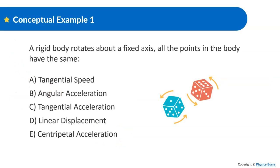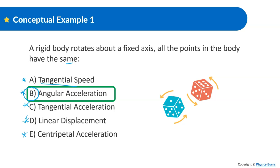Moving on to a conceptual question. A rigid body rotates about a fixed axis — all the points in the body have the same what? Option A: tangential speed — not true, the inside of the body will have less tangential speed. Option B: angular acceleration. Option C: angular tangential acceleration — not true, the inside will have less tangential acceleration than the outer edge. Linear displacement — no, because the inside and outside differ. Centripetal acceleration — no, because tangential velocity is different, so centripetal acceleration will also be different. That leaves us with angular acceleration.